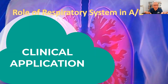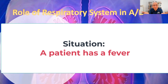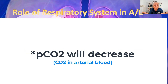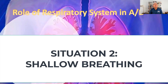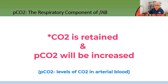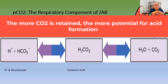Let's apply this in the clinical setting. Suppose a patient is having a fever. Because of the fever, the respiratory rate is going to increase — so what do you expect the PCO2 in arterial blood to be? Now consider another patient who is not breathing well and has very shallow breaths. The PCO2 will be increased because both the depth and rate of respiration have decreased. The PCO2, as a function of the respiratory system, is a key determinant of acid-base balance.